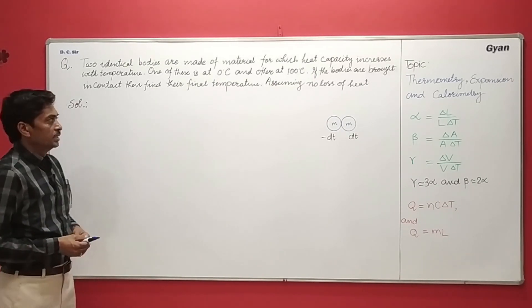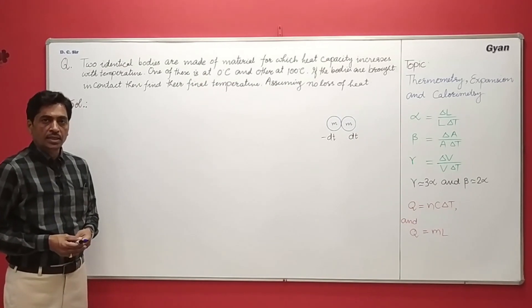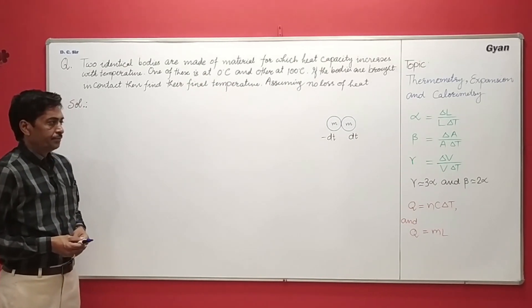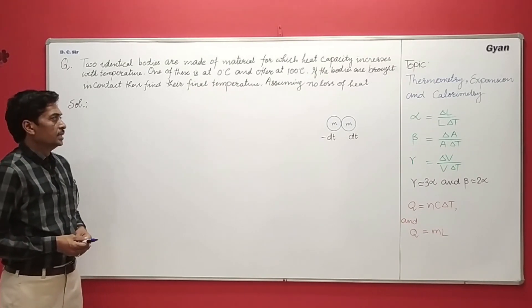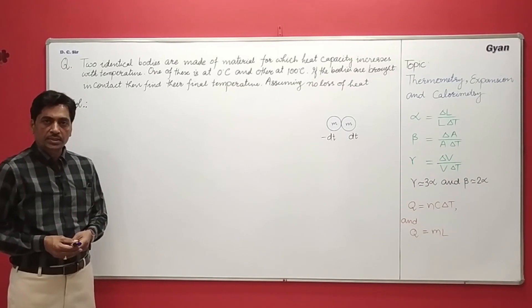One of these is at zero degree and the other one is at 100 degree Celsius. If the bodies are brought in contact then find their finite temperature, assuming no loss of heat.